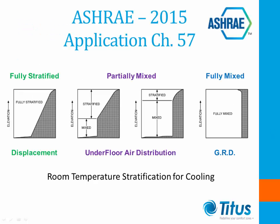Let's look at the common methods used to provide comfort conditioning to a space. Each of these diagrams shows the temperature stratification in the space for various methods of air distribution. On the left, we see the results of a fully stratified displacement ventilation system. With displacement ventilation, we introduce cool air into the space at the floor, discharging horizontally, and let it stratify from the floor to the ceiling. In this space, we will see an increase in room temperature from floor to the return height or the ceiling height.